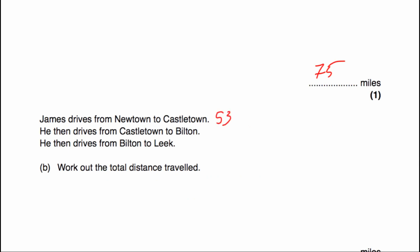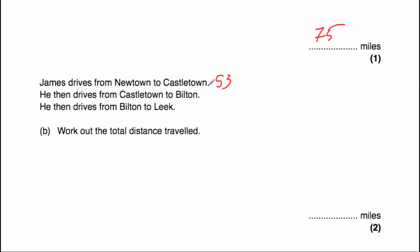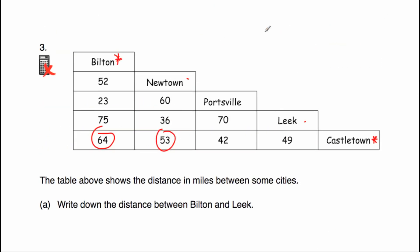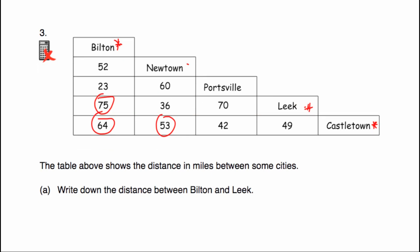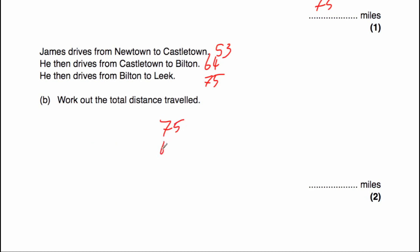Then from Castletown to Bilton — Castletown is here and Bilton is here — that's going to be 64 miles. So we've got 53 to begin with, then 64. And finally from Bilton to Leek — if we go down and across, that's 75 miles. Now we work out the total: 75 plus 64 plus 53. 5 plus 4 is 9, plus 3 is 12, put the 2 down, carry 1. 7 plus 6 is 13, plus 5 is 18, plus 1 is 19. So it'll be 192 miles.